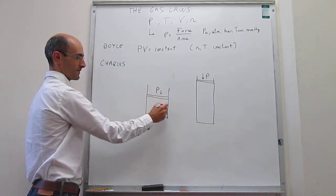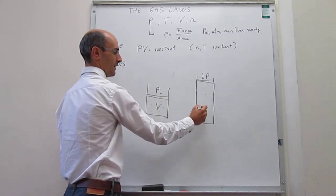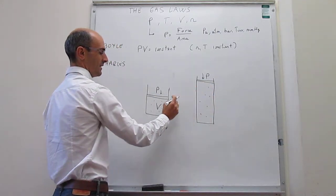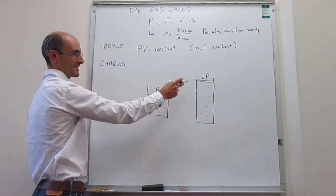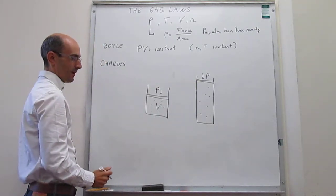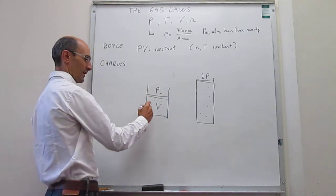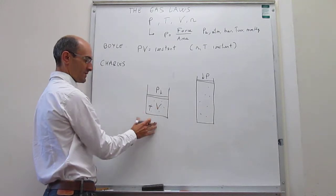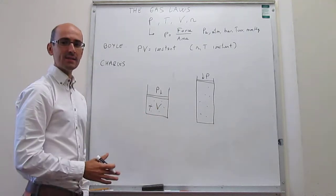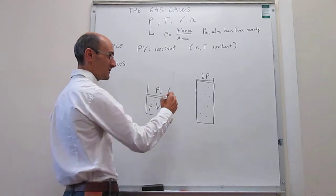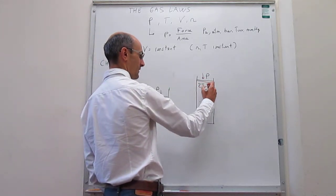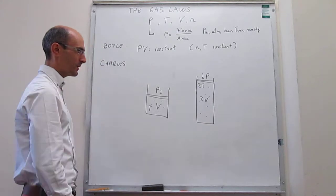So the number of gas particles that you have is going to be the same initially and at the end, because these gas molecules can't escape that cylinder. Now, the idea is that you're initially at some temperature. So what you can do is elevate the temperature of the gas and see what happens to the volume. And it turns out that if you double the temperature, then the volume doubles as well.